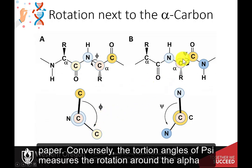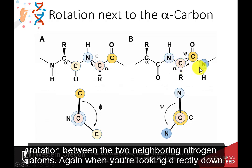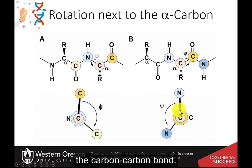Conversely, the torsion angle psi measures the rotation around the alpha carbon-carbon linkage with the carbonyl group. For these angles, we will evaluate the rotation between the two neighboring nitrogen atoms, again when you're looking directly down the carbon-carbon bond.